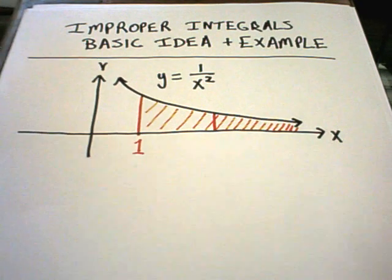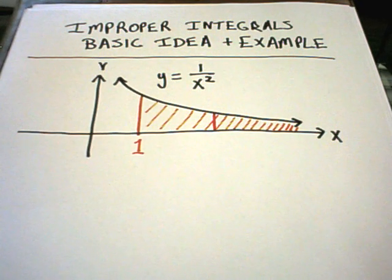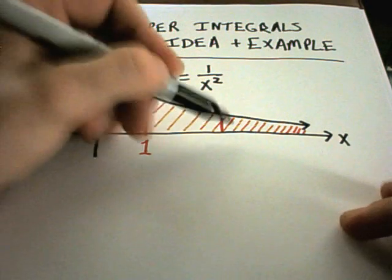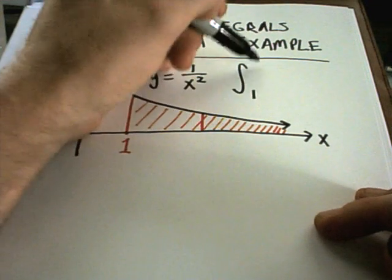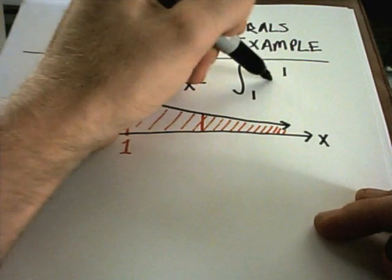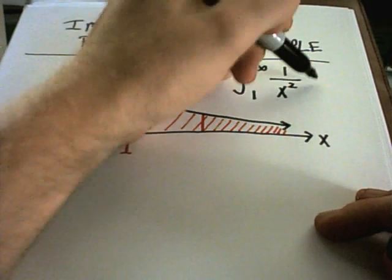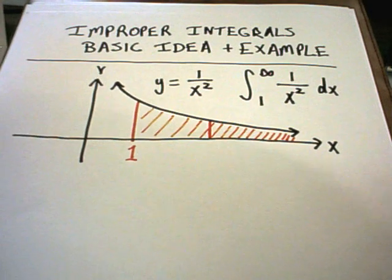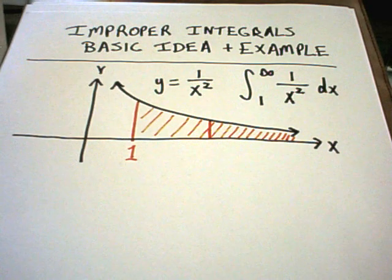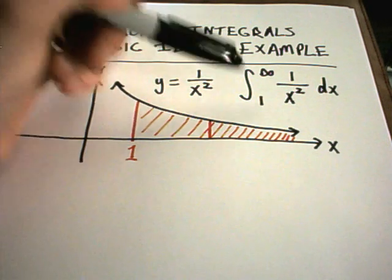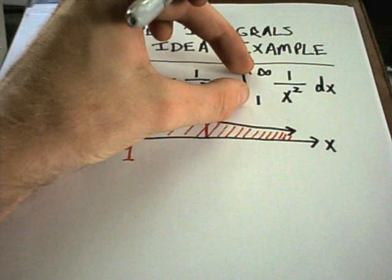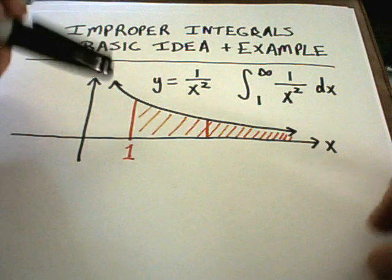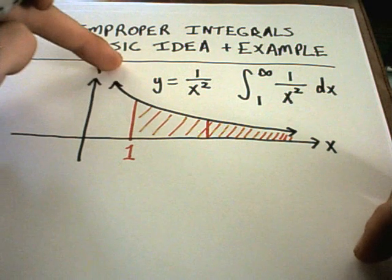The way that we express this in this case, so I want to go all the way out to infinity, is we use the notation, well we're going to integrate from 1 to infinity of 1 over x squared dx. And this is the idea with an improper integral: either the interval that you're integrating over is infinite, or the other idea is maybe the graph is spiking off to infinity and somehow you're trying to figure out its area over that region as well.